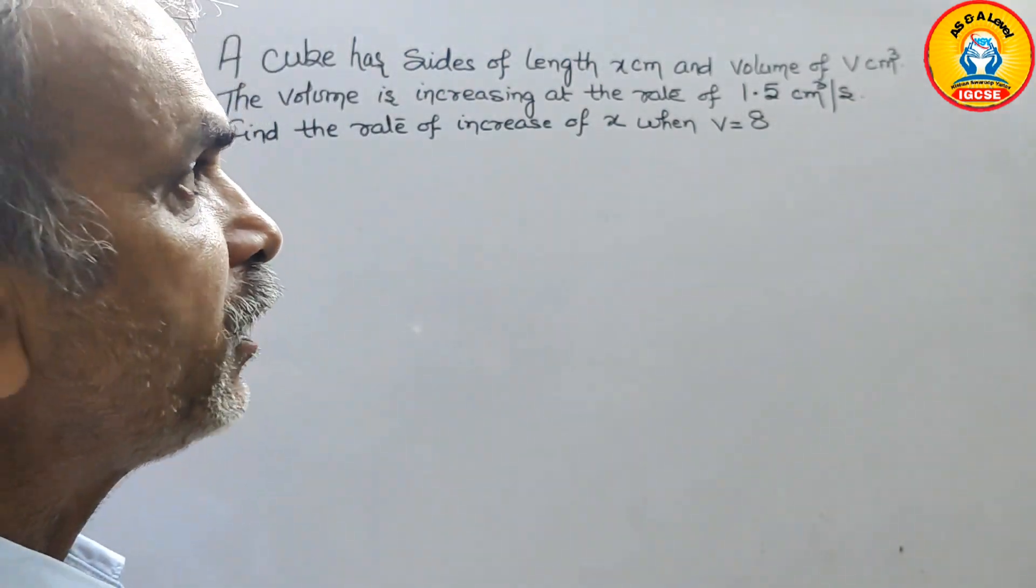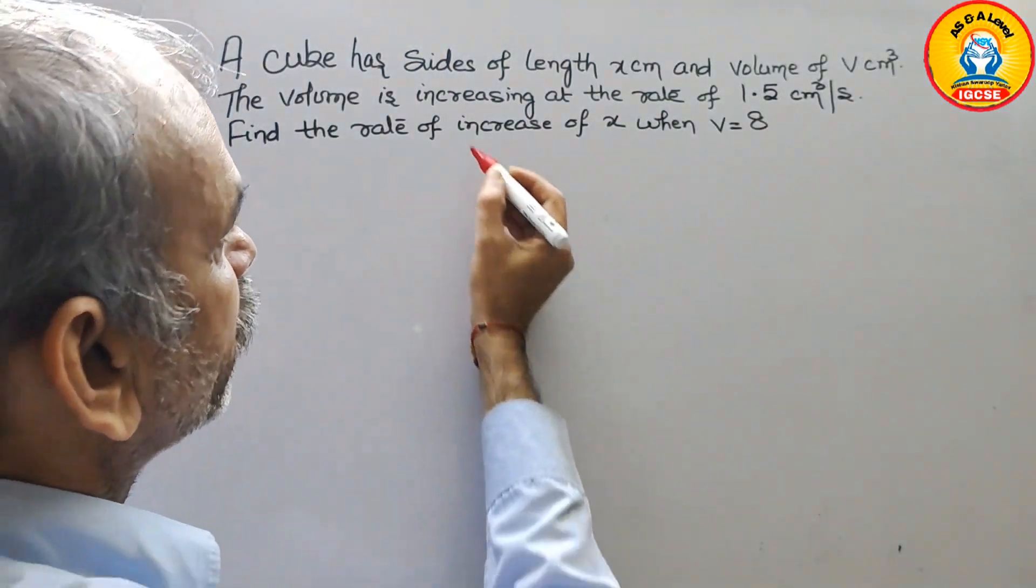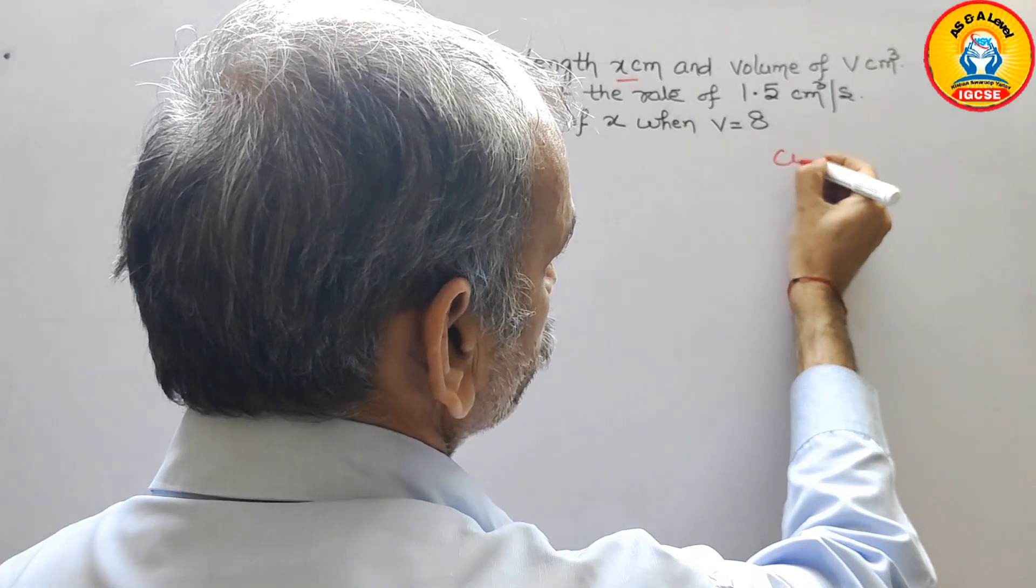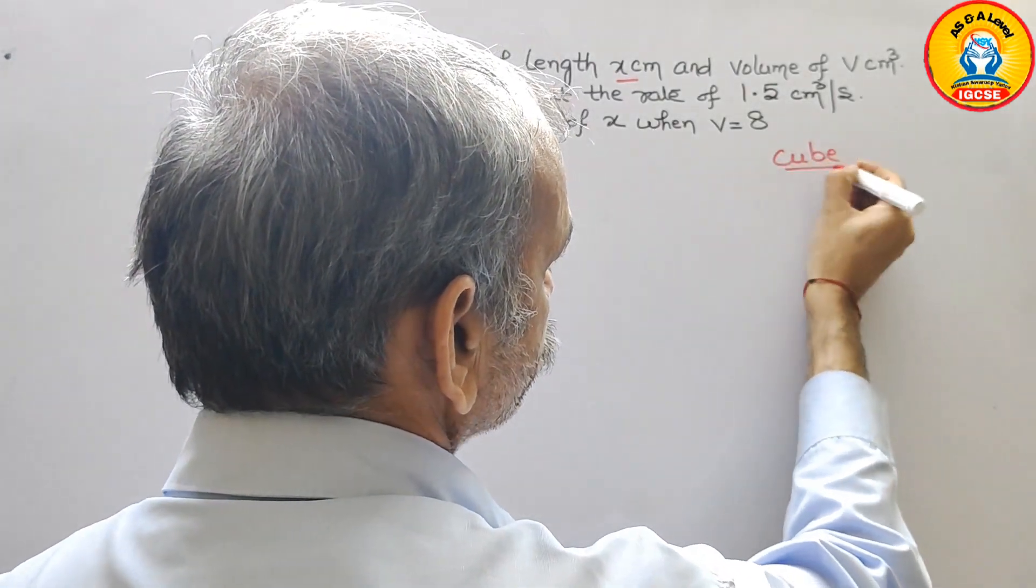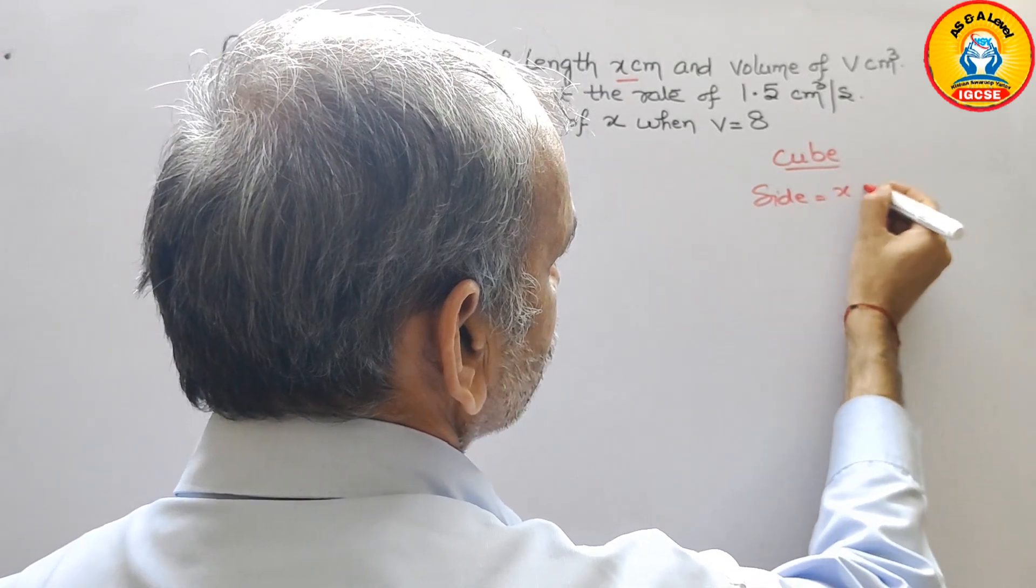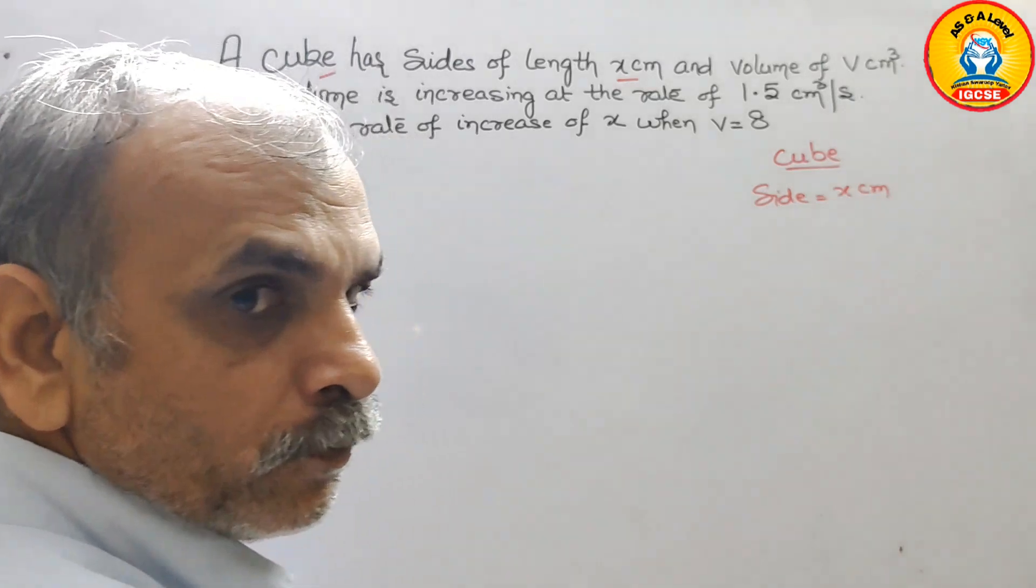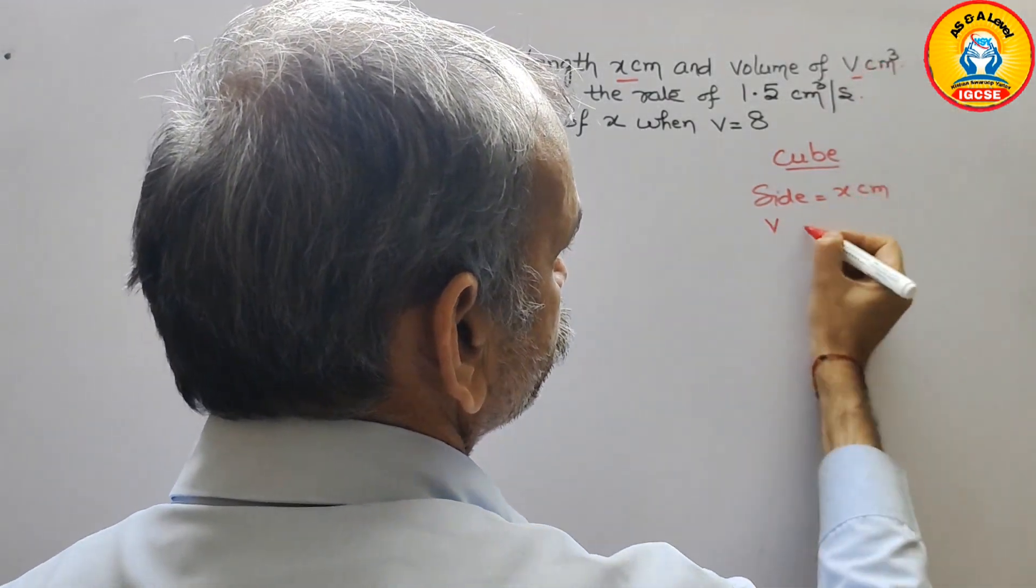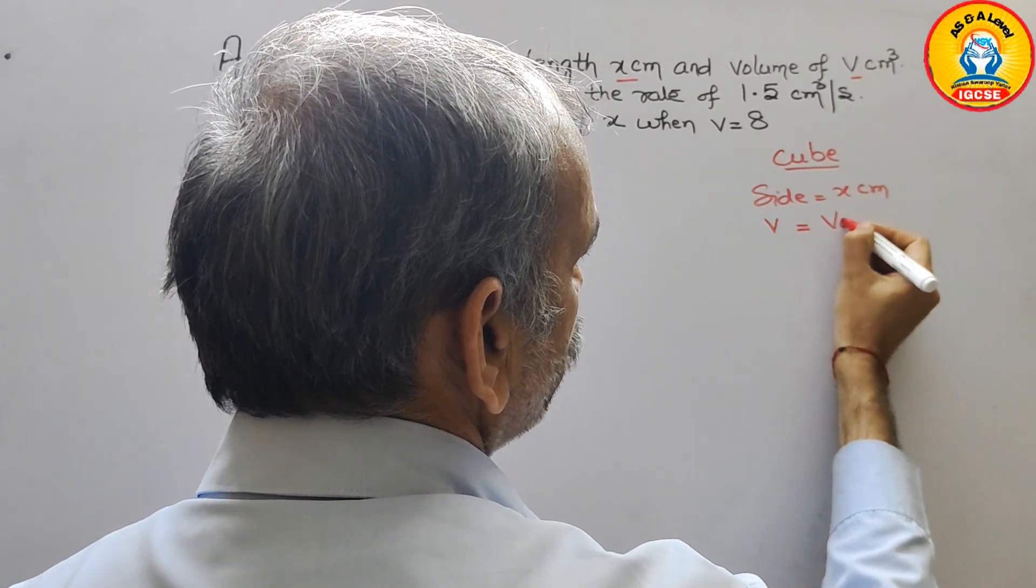So what they have given, we will write. In a cube they have given the side that is x. So we can say cube, side is x centimeter and v is the volume they have told, v is the volume.